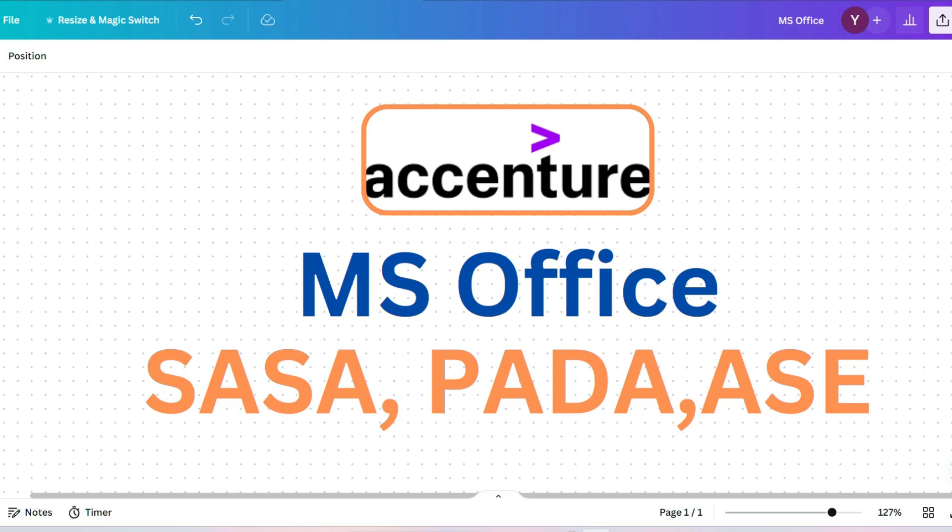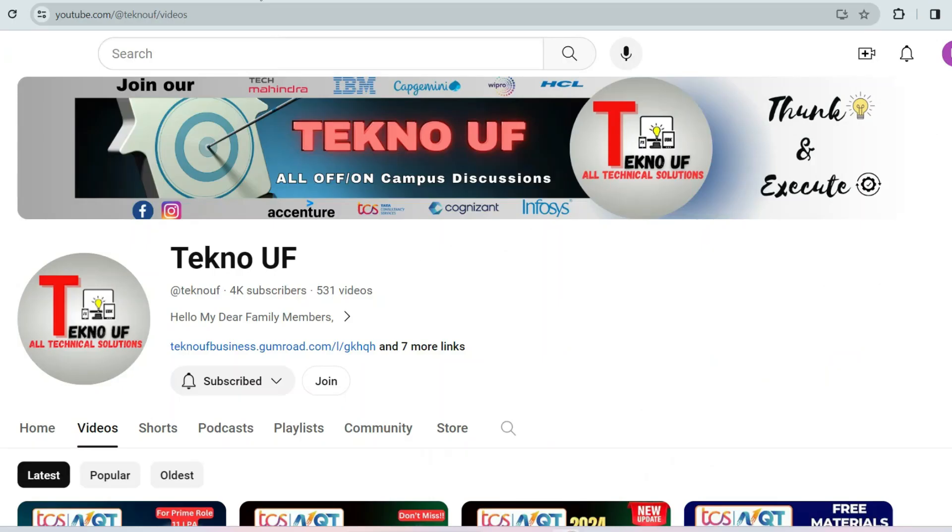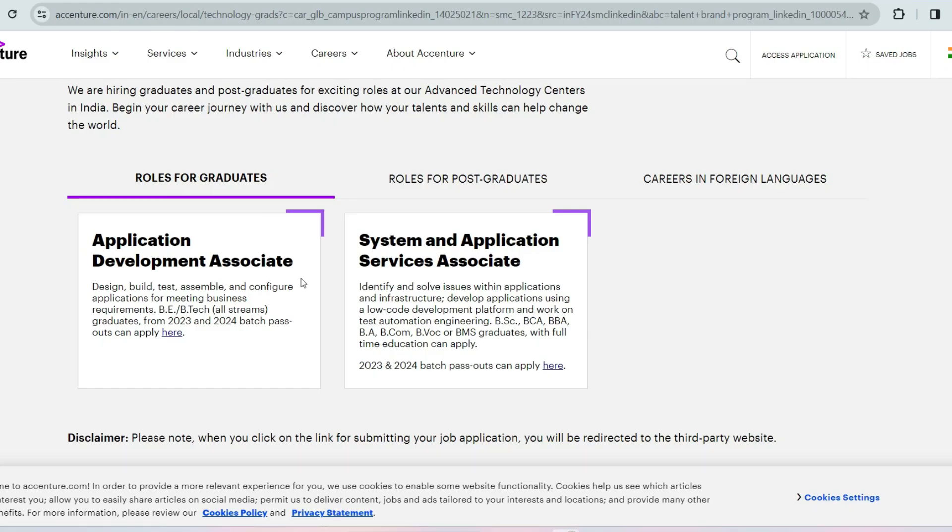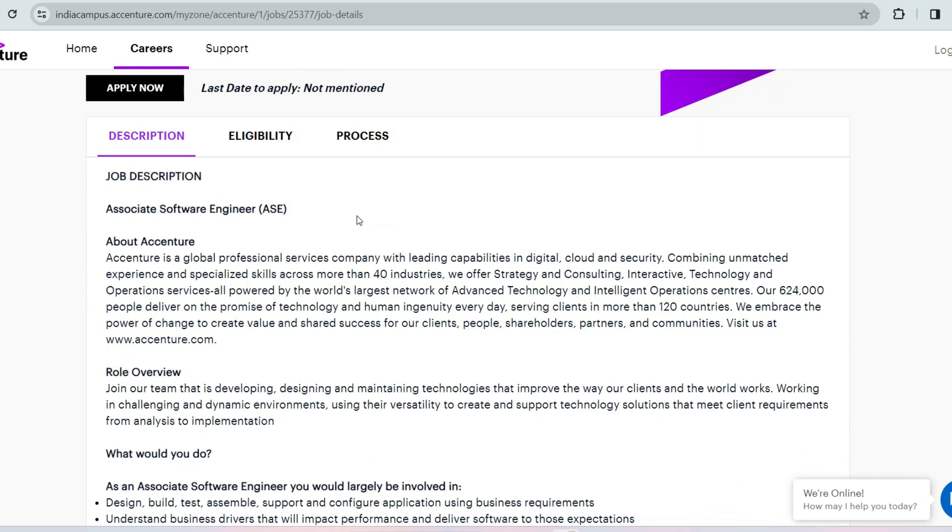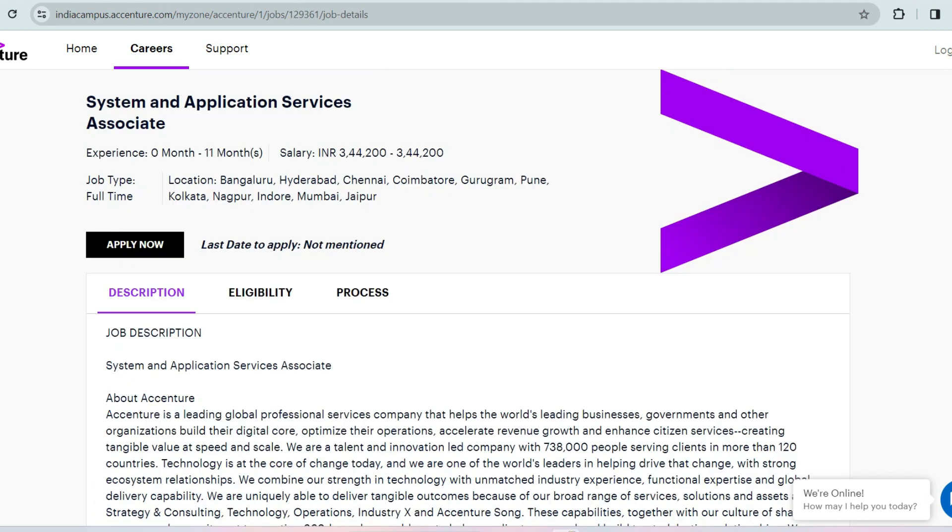Before that, let me announce that Accenture is hiring for PADA and SASA roles. If you have not applied yet, then apply through the link given in the description box. If you want to be a developer, go with PADA. If you want to be a cloud architect or tester, you can go with SASA role. But in SASA role, package is one lakh lesser than PADA role. So as per your choice, go with those.